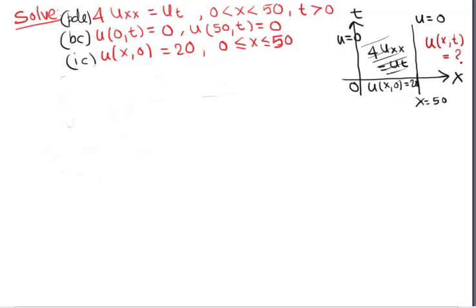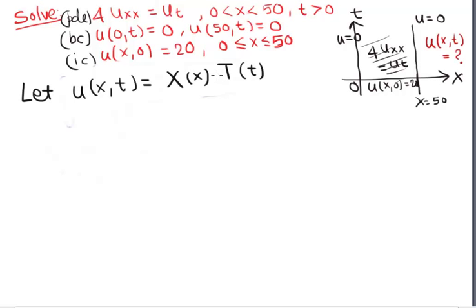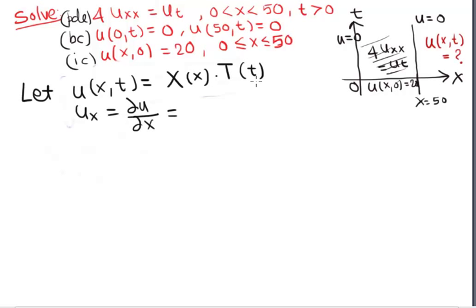We want to use the method of separation of variables. For that, we assume the solution u(x,t) = X(x)·T(t) — that is, the solution can be written as a product of two functions where X is a function of x only and T is a function of t only. We then plug this into the PDE.